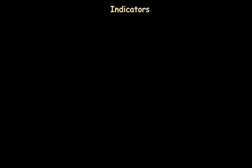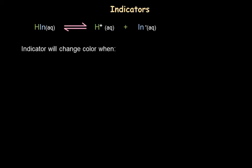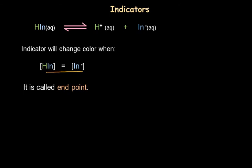We know that indicators are weak acids, but when an indicator changes color, the concentration of the molecular form and the concentration of the anion form of the indicator should be equal. The indicator changes color when this stage is reached. Such a stage — at which the concentration of both the molecular and anion form is equal and the color change occurs — is called an end point.